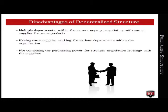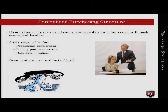Yet another disadvantage is not combining the purchasing power for stronger negotiation leverage with suppliers. Unlike decentralized, a centralized purchasing structure involves coordinating and managing all purchasing activities for the entire company through one central location. The purchasing department is solely responsible for purchasing requisitions, issuing purchase orders, and selecting suppliers. The purchasing management professionals operate at the strategic and tactical level, unlike in a decentralized structure.